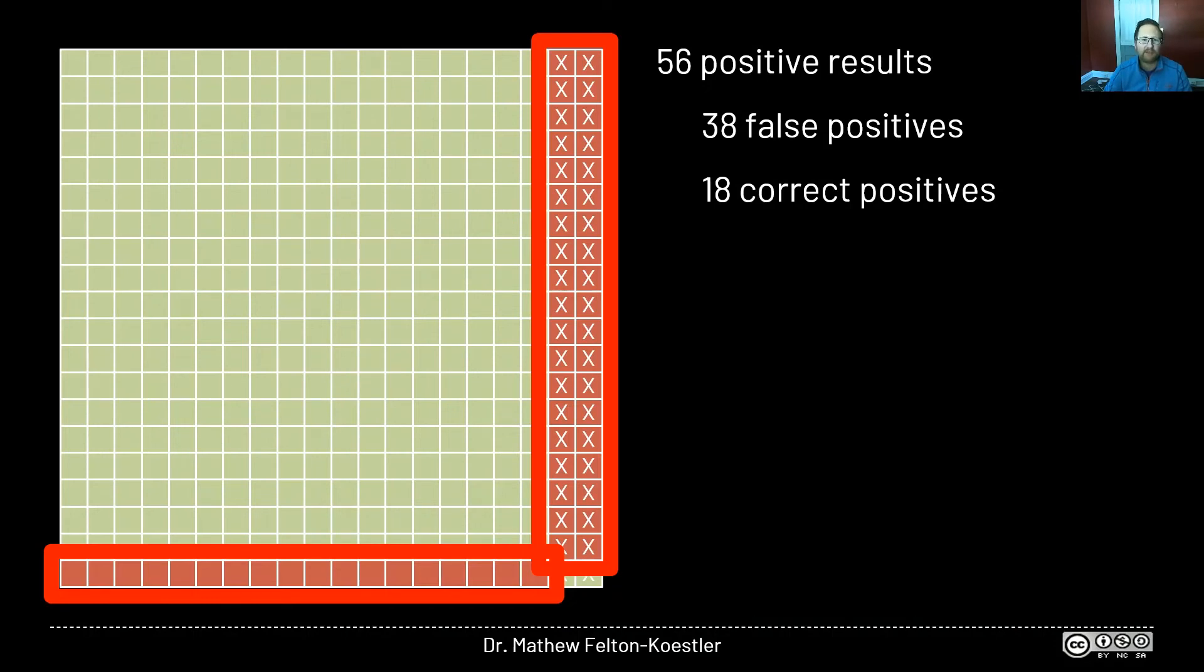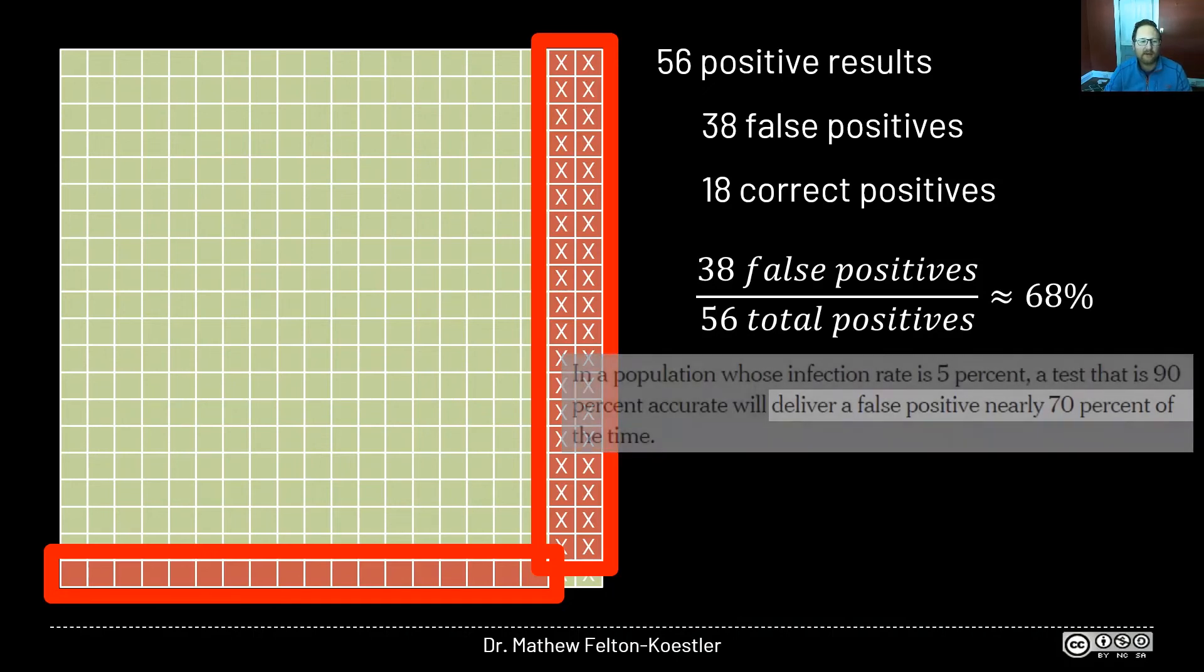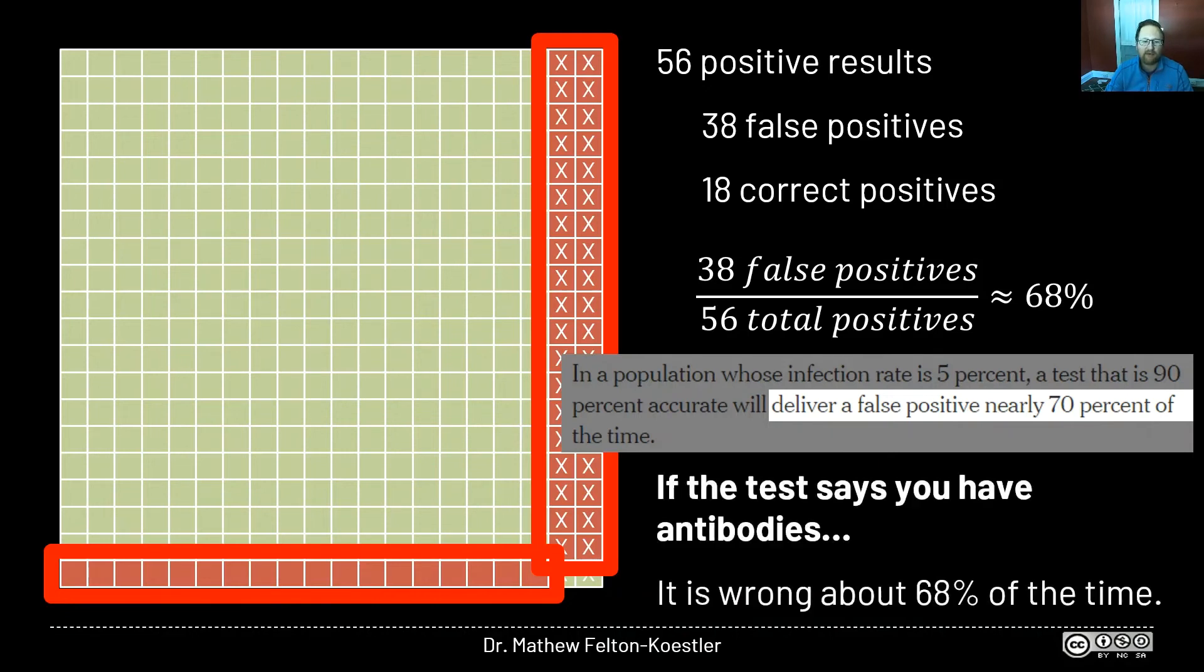So let's take a look at those and talk about them. We have 56 total positive results. 38 of them are false, the ones with the X's going up and down. And 18 of them are true, the ones without the X's going along the bottom there. So if the test tells you that you have antibodies, what is the chance you actually do? Now you might already see part of the problem. There are way more false positives, way more boxes with X's than there are without. So if the test says you have antibodies, it's probably wrong. To figure out the rate, we can just use 38 false positives divided by 56 total positives, and that's about 68%. So when they talk in the article about a nearly 70% false positive, that's what they're talking about. So in this hypothetical example, if the test says you have antibodies, then it's wrong 68% of the time and right only 32% of the time.